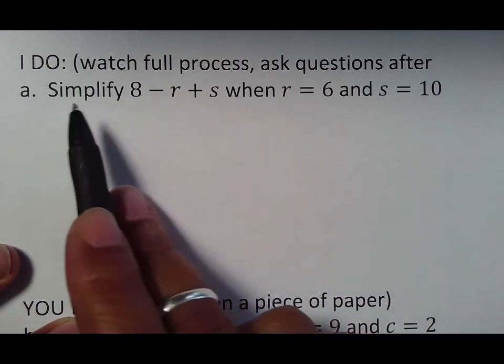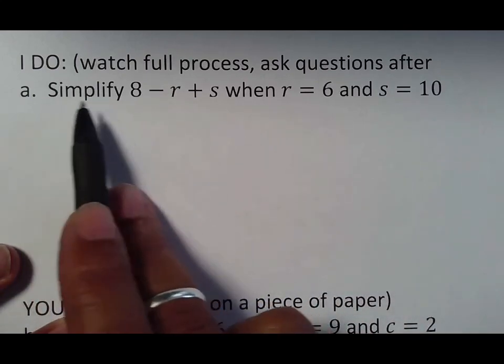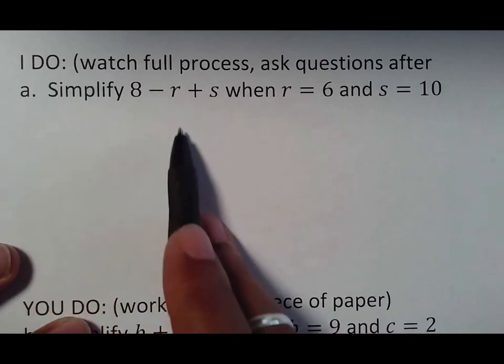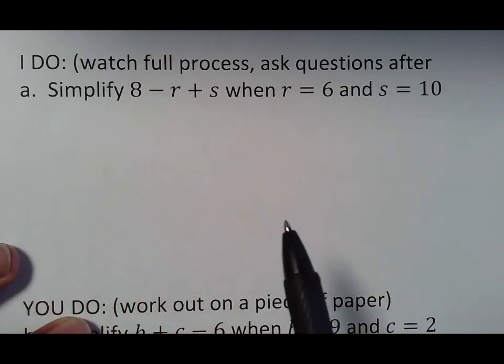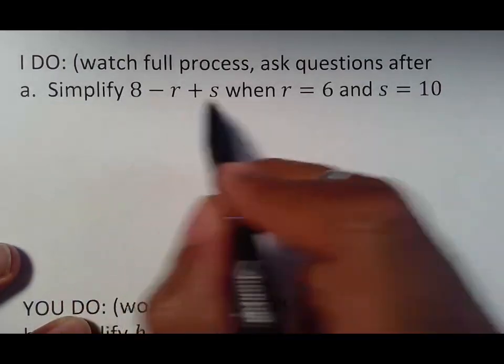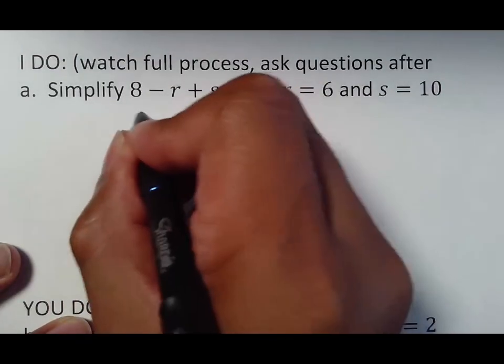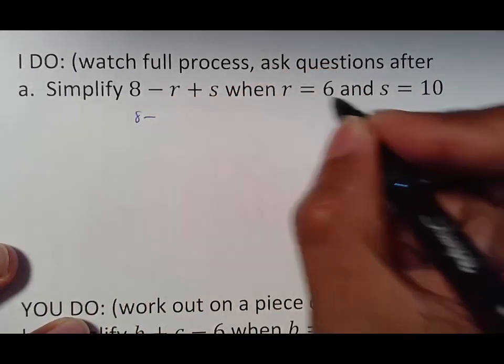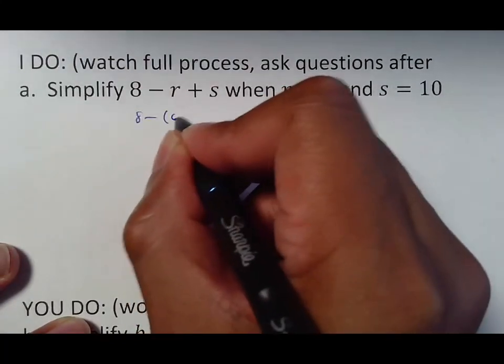So simplify, which means pretty much either evaluate or solve, or pretty much means figure out what this equals when R is equal to six and S is equal to 10. So 8 minus R plus S. 8 is good, minus is good. R, oh, what does R mean? R is six. I'm going to put parentheses six plus S. Oh, S is 10. So plus parentheses 10.